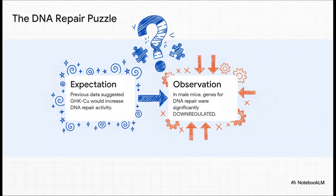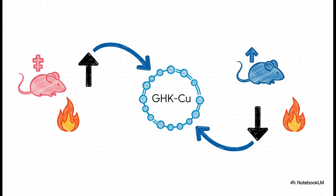So check this out. This is one of the biggest head scratchers. Everyone thought GHK would boost DNA repair. I mean, that's one of its big claims. But in the study, they saw the exact opposite. In the male mice, the genes for DNA repair were actually turned down significantly. A totally counterintuitive result. And it got even weirder when they looked at inflammation on a genetic level. Here, the effects were completely split by sex. In the female mice, GHK-Cu actually ramped up key inflammatory pathways. But in the male mice, it did the exact opposite. It turned them down. The same molecule, two totally different results.